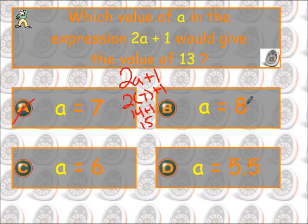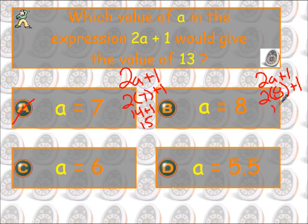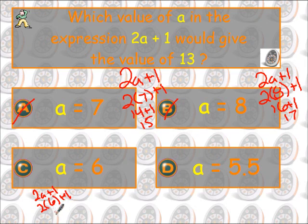So let's look at b. We've got 2a plus 1 — writing down our original problem, showing our substitution, and then doing the problem. So 16 plus 1 is 17. So that's not right. Over here, 2a plus 1 — so 2 times 6 plus 1. 2 times 6 is 12, plus 1 is 13. So there's the answer.